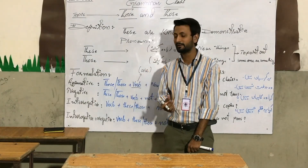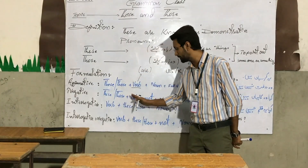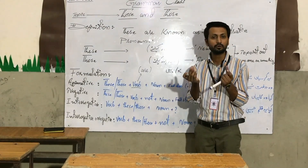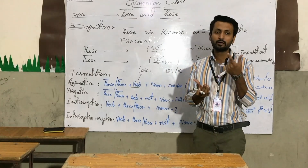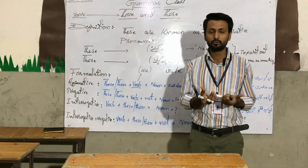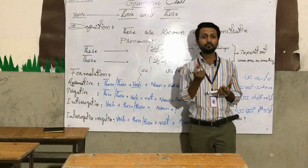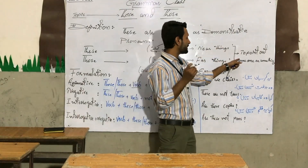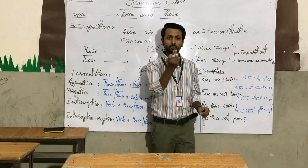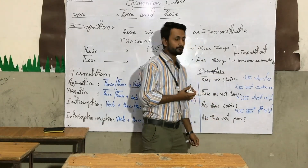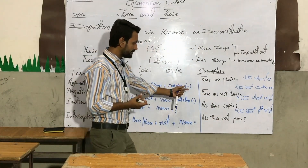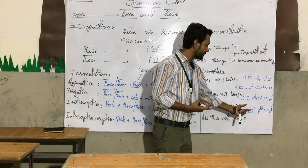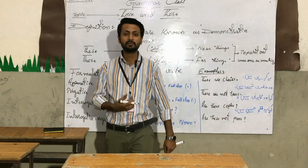Then comes interrogative negative. The structure is: verb 'are', then 'these' or 'those' according to the Urdu, then 'not', then the noun. When you want to point out someone or something, we use 'these' or 'those'. The example is: 'Are these not pens?'